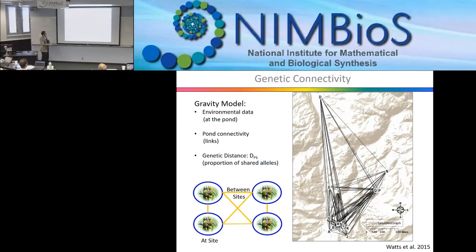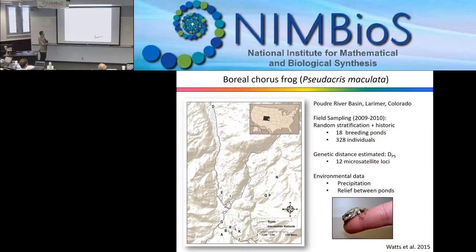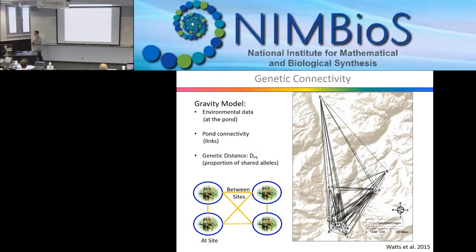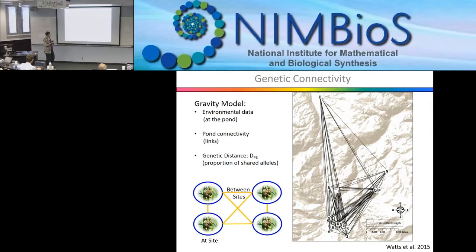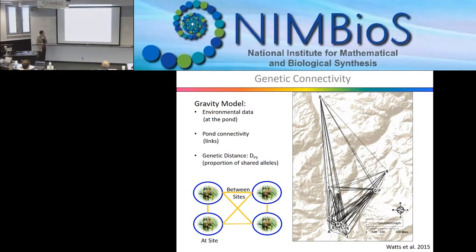This is the spaghetti linking all potential movement between all 18 ponds. But recall this is a very small frog that cannot move very far. In fact, the frog can move only 600 meters, so those long links are impossible. This is the functional connectivity of the frog — at 600 meters, this is the extent of dispersal ability. The lower ponds are connected, but the one in the north is isolated by itself.